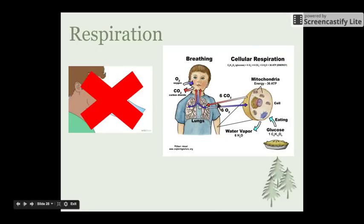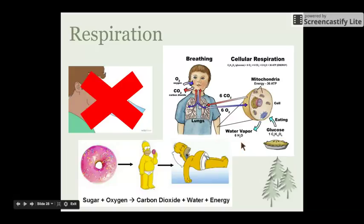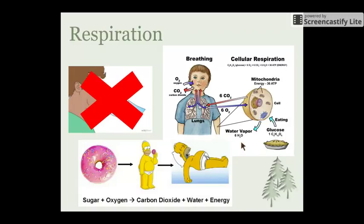Cellular respiration takes place on the cellular level in every single cell of our body. A special part of the cell called the mitochondria is where respiration takes place, and it uses glucose and oxygen in order to produce energy. The word equation for respiration is: sugar plus oxygen gives us carbon dioxide plus water plus energy.